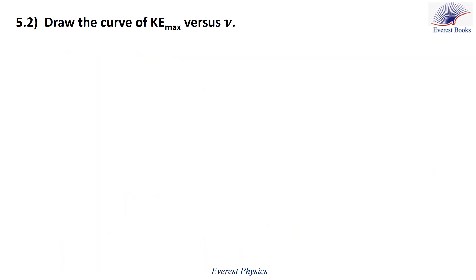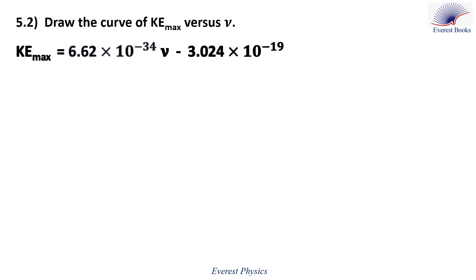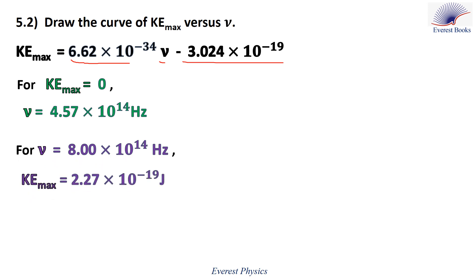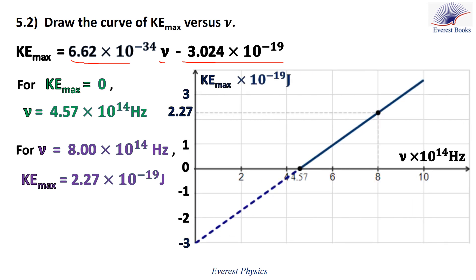Part 5.2: draw the curve of Ke maximum versus nu. Since Ke max equals a constant multiplied by nu plus another constant, the graph is a straight line. To draw it, we find two points: for Ke max equals zero, nu equals 4.57 times 10 to the power 14 hertz; and for nu equals 8 times 10 to the power 14 hertz, Ke max equals 2.27 times 10 to the power minus 19 joules. We plot these two points and join them to get the straight line.